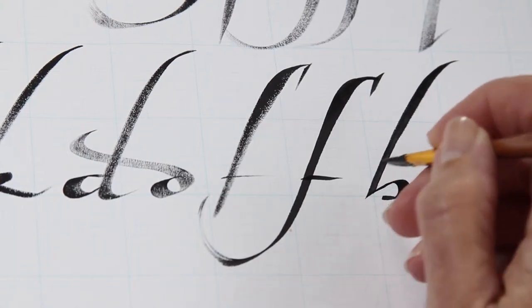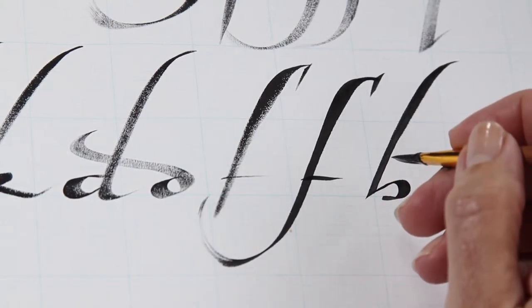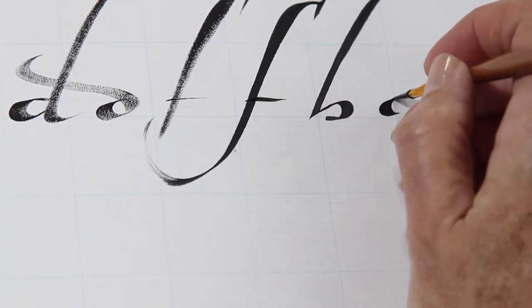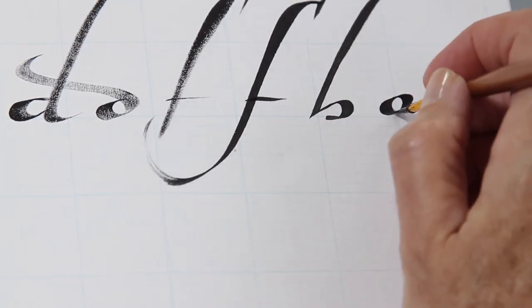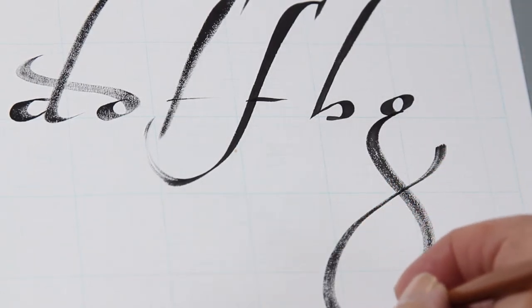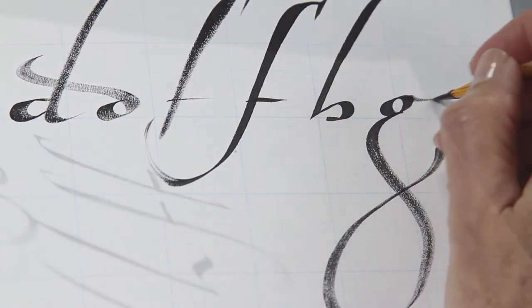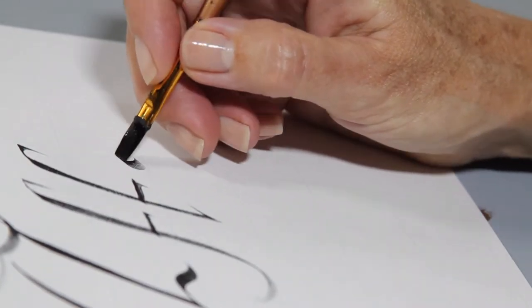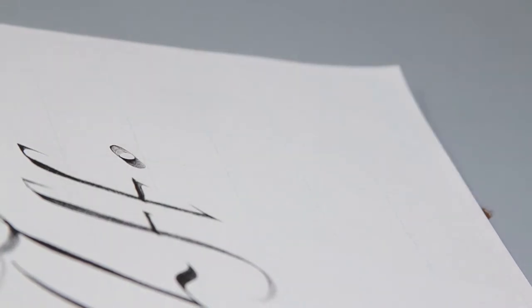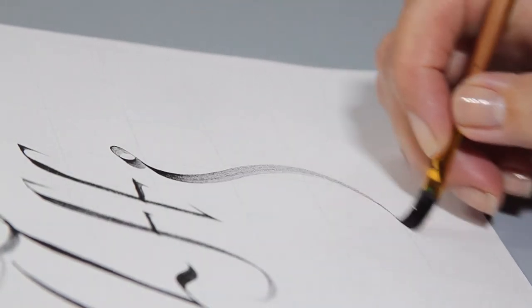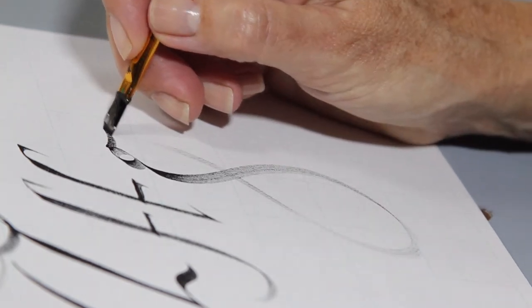Same thing with B, with the B bowl. And now I'm going to do an alternative kind of G that has a small bowl and then quite a lot of flourishing as it comes down a long S curve. And these descenders can be just as long as you have room for them to go.